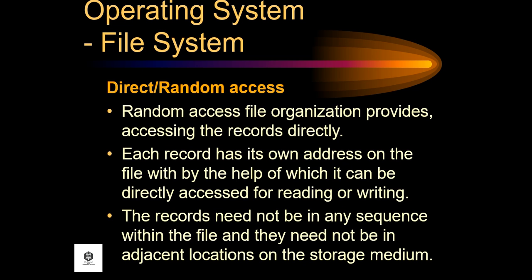Next is direct or random access. Random access file organization provides direct access to records. Each record has its own address on the file, by the help of which it can be directly accessed for reading or writing. The records need not be in any sequence within the file and they need not be in adjacent locations on the storage medium.